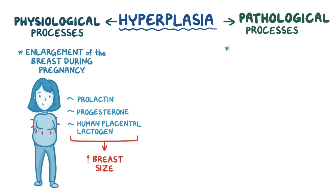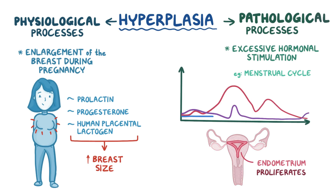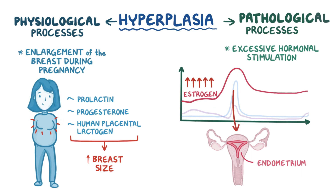An example of pathologic hyperplasia is having excessive hormonal stimulation. For example, normally during a menstrual cycle, the endometrium, which forms the inner lining of the uterus, grows and proliferates when exposed to estrogen. But if there's an overproduction of estrogen by an ovarian tumor, it can lead to excessive endometrial growth, also called endometrial hyperplasia.